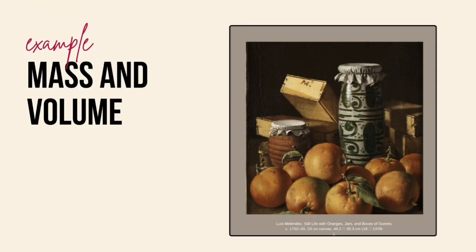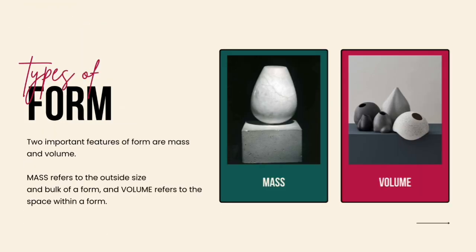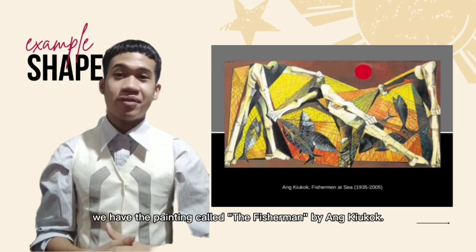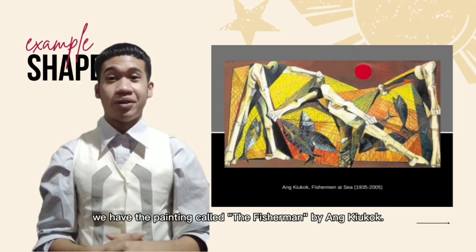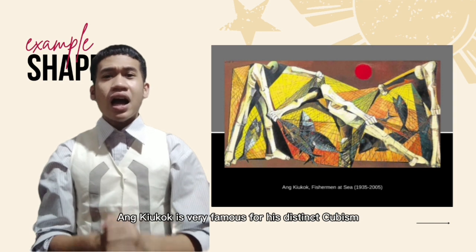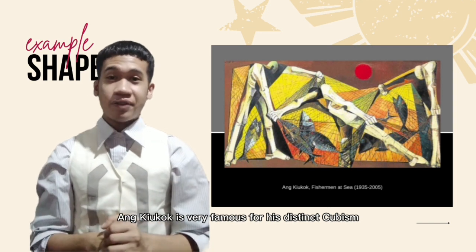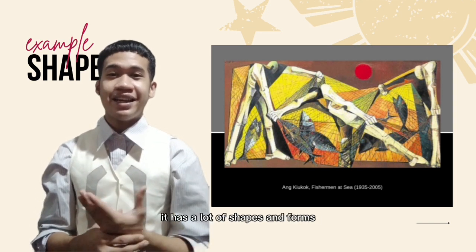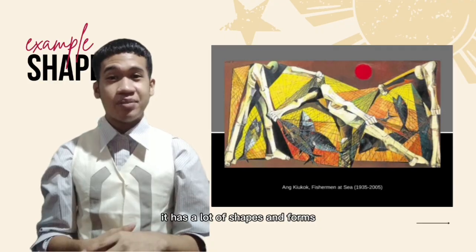Mass and volume are the two important features of form. Mass refers to the outside size, while volume refers to the space within the form. Here in the Philippines, we have the painting called The Fisherman by Ang Kiukok. Ang Kiukok is very famous for his distinct cubist style, and as you can see in his painting, it has a lot of shapes and forms.